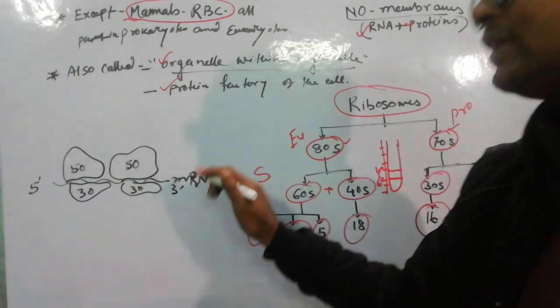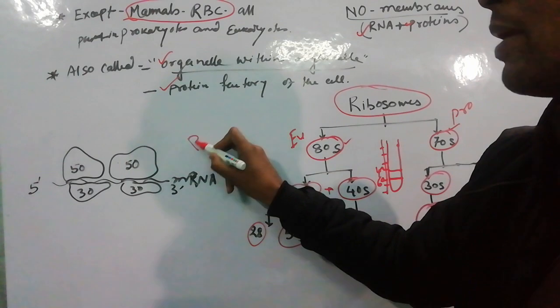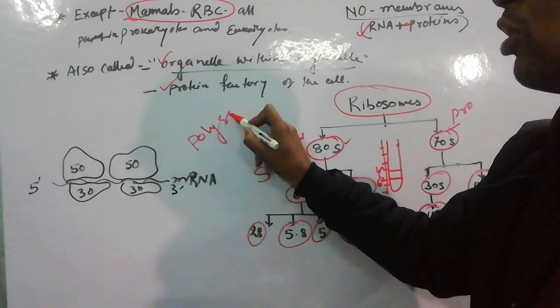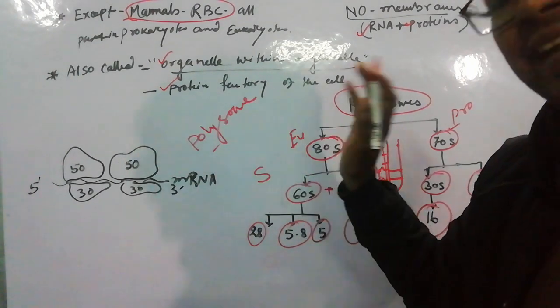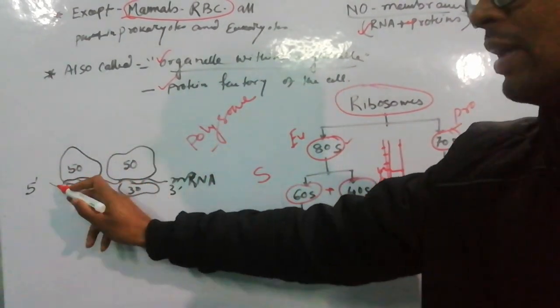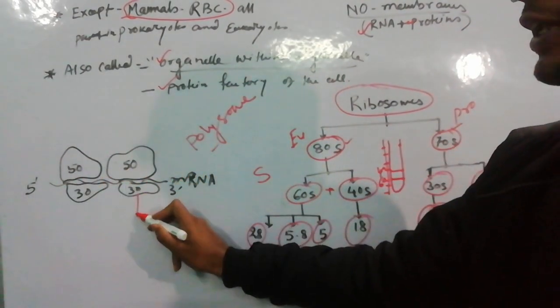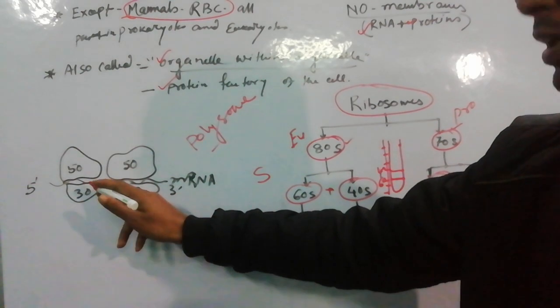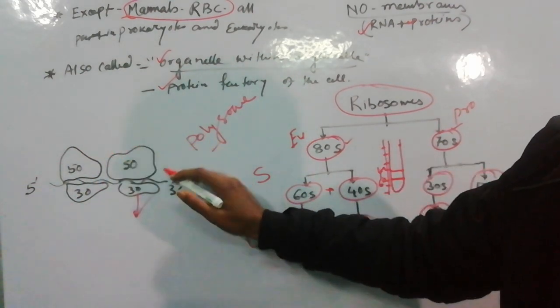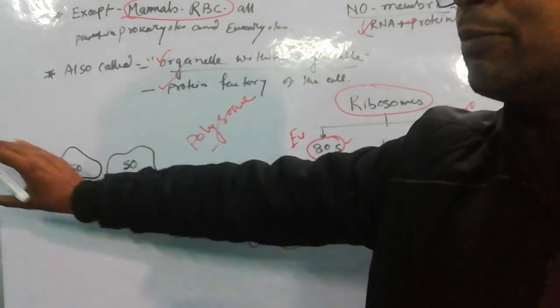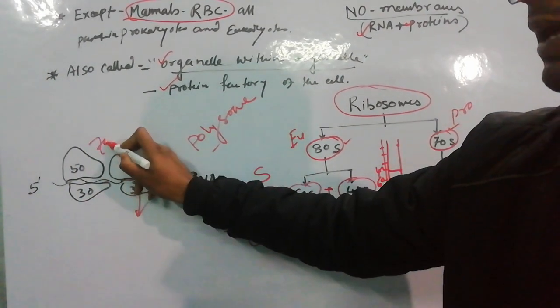And its protein synthesis machinery forms polysome. Polysome or polyribosome. This is its main concept - ribosomes bind to mRNA and prepare protein. And when protein is prepared by binding to mRNA, then in one mRNA there are many such ribosome units.